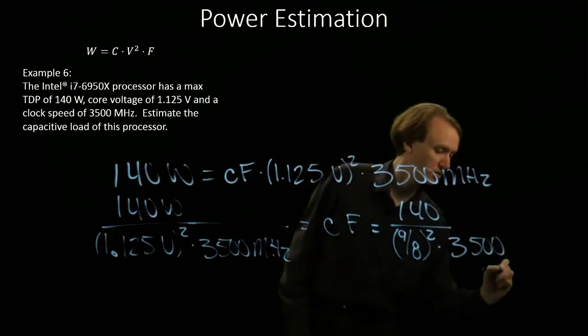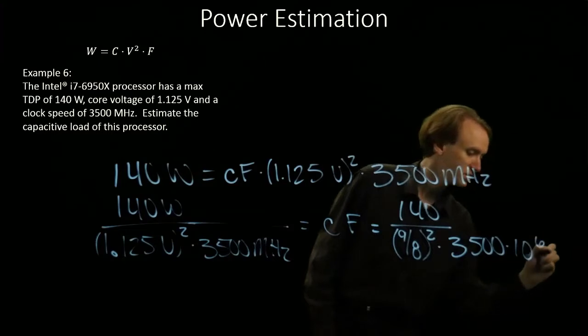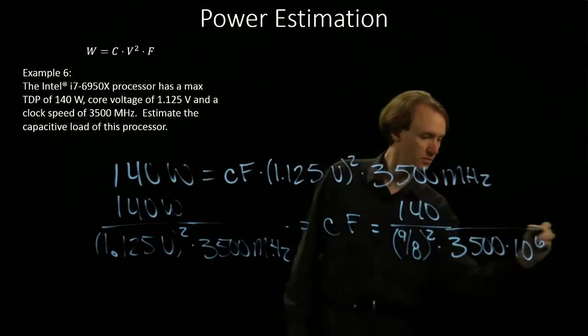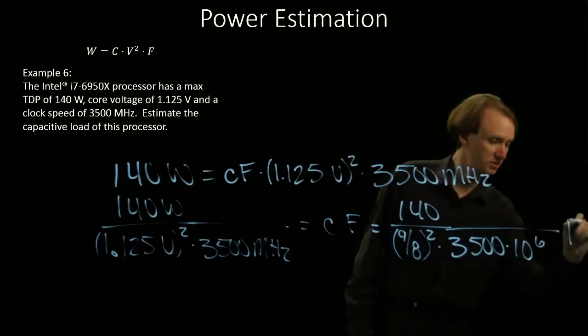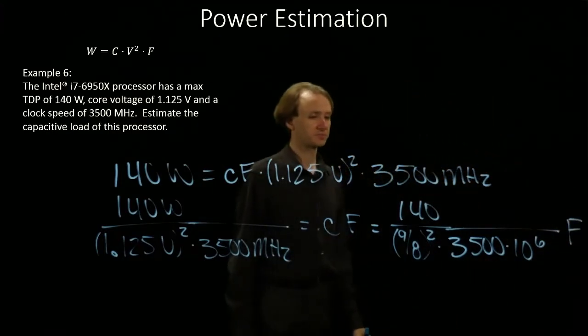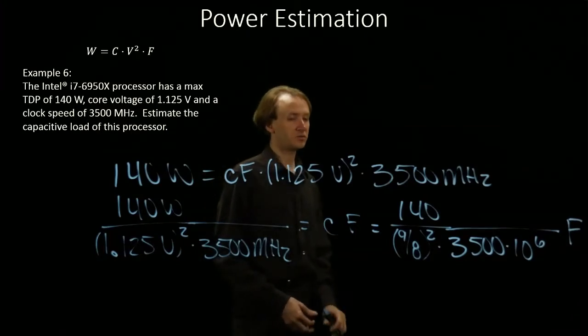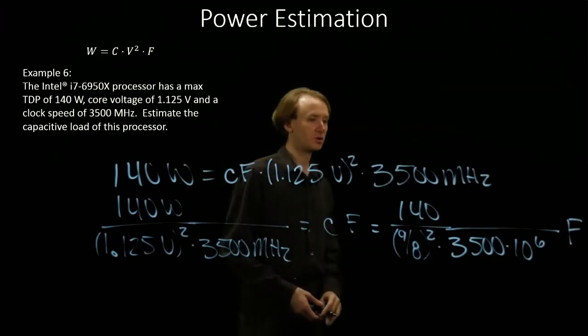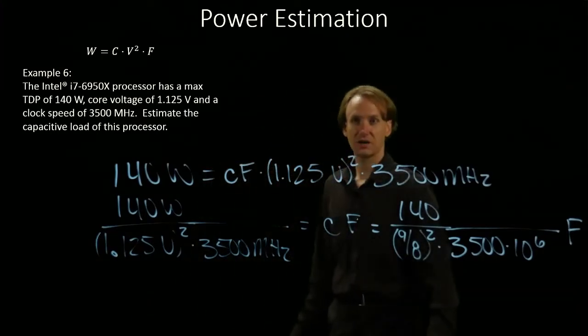For the moment I will put in 3500 times 10 to the 6th. And the result here is going to be some number of farads. At this point we could simplify this some more, but really we just want to toss this into our calculator and get our result out.